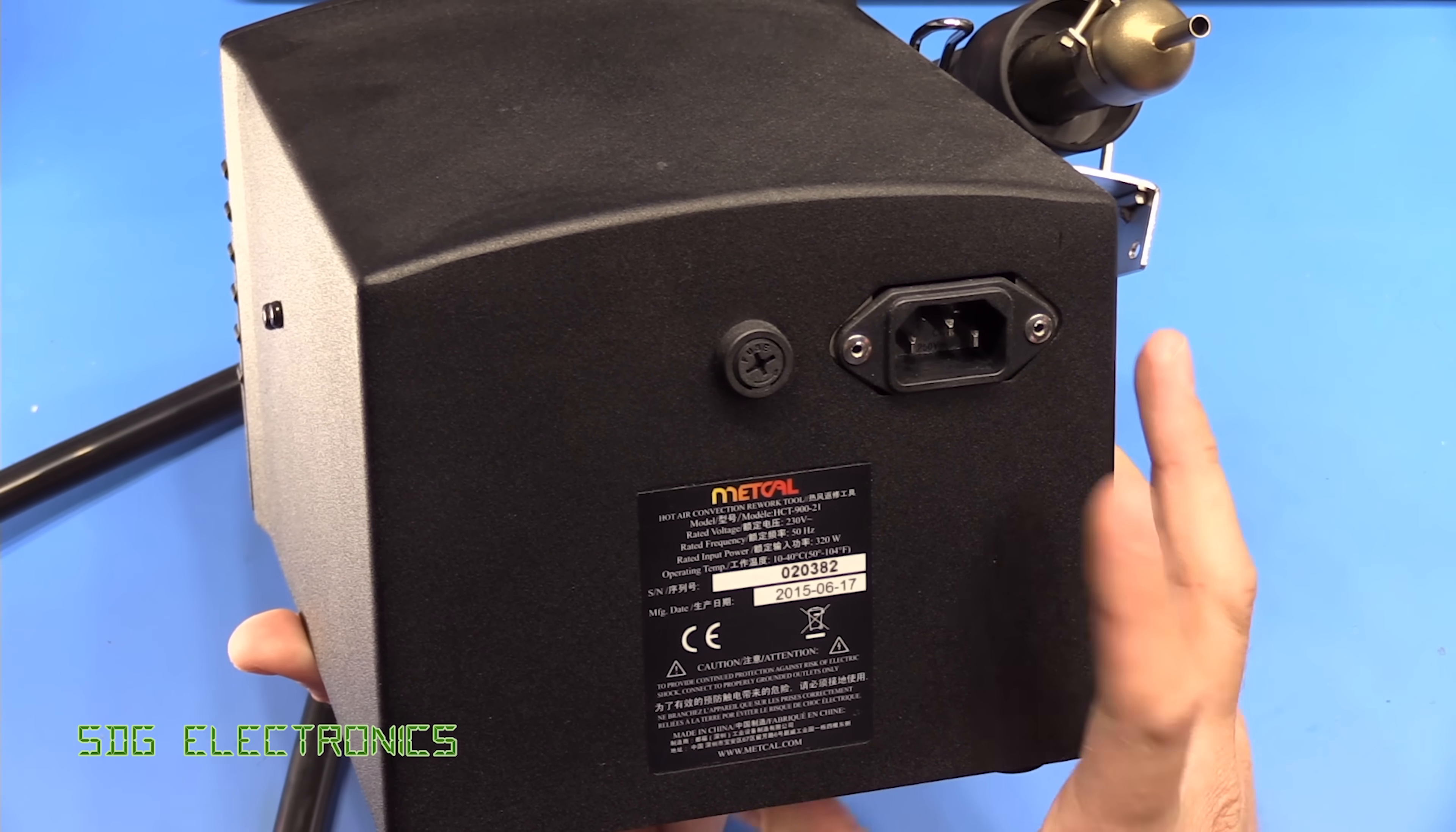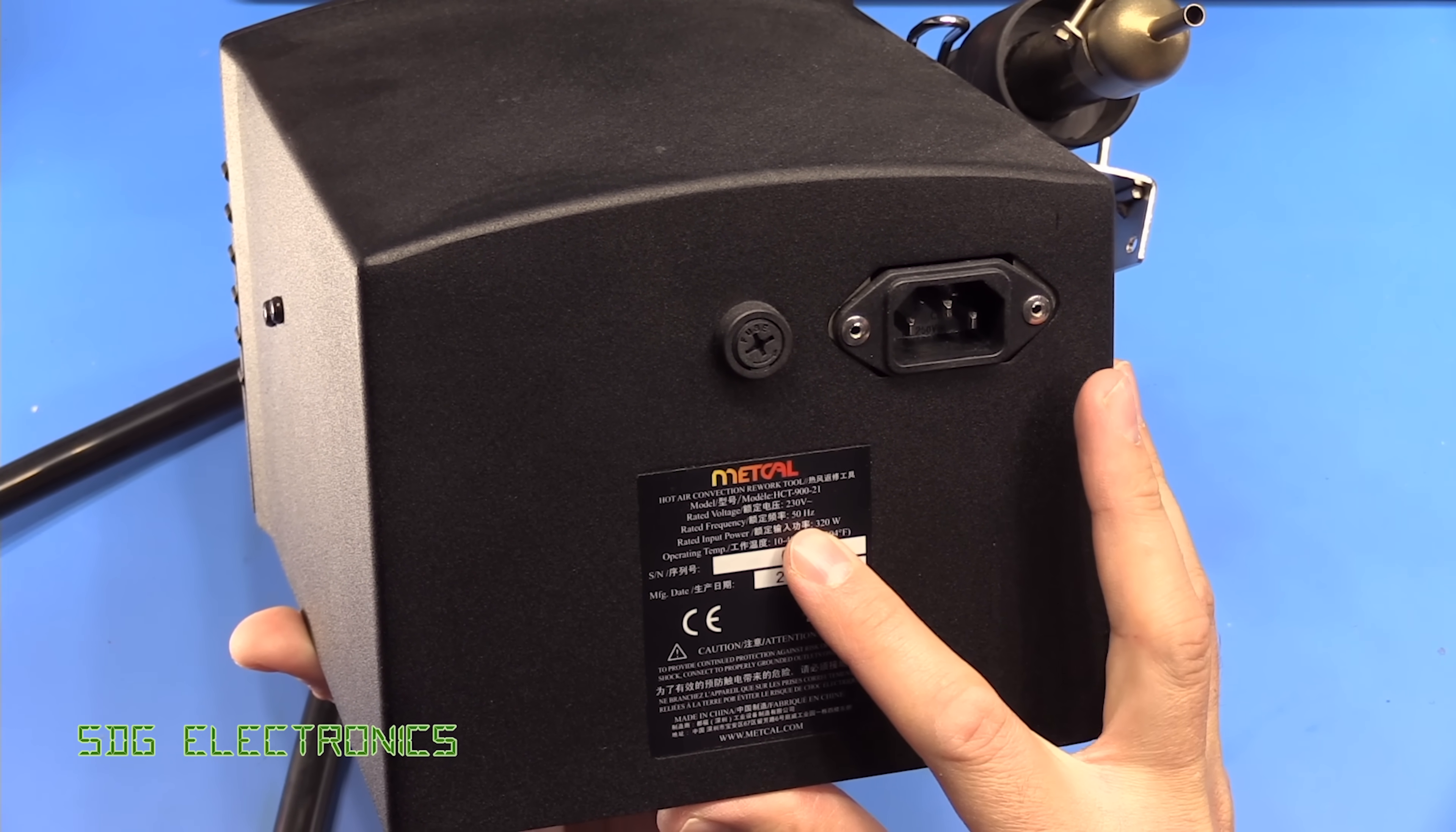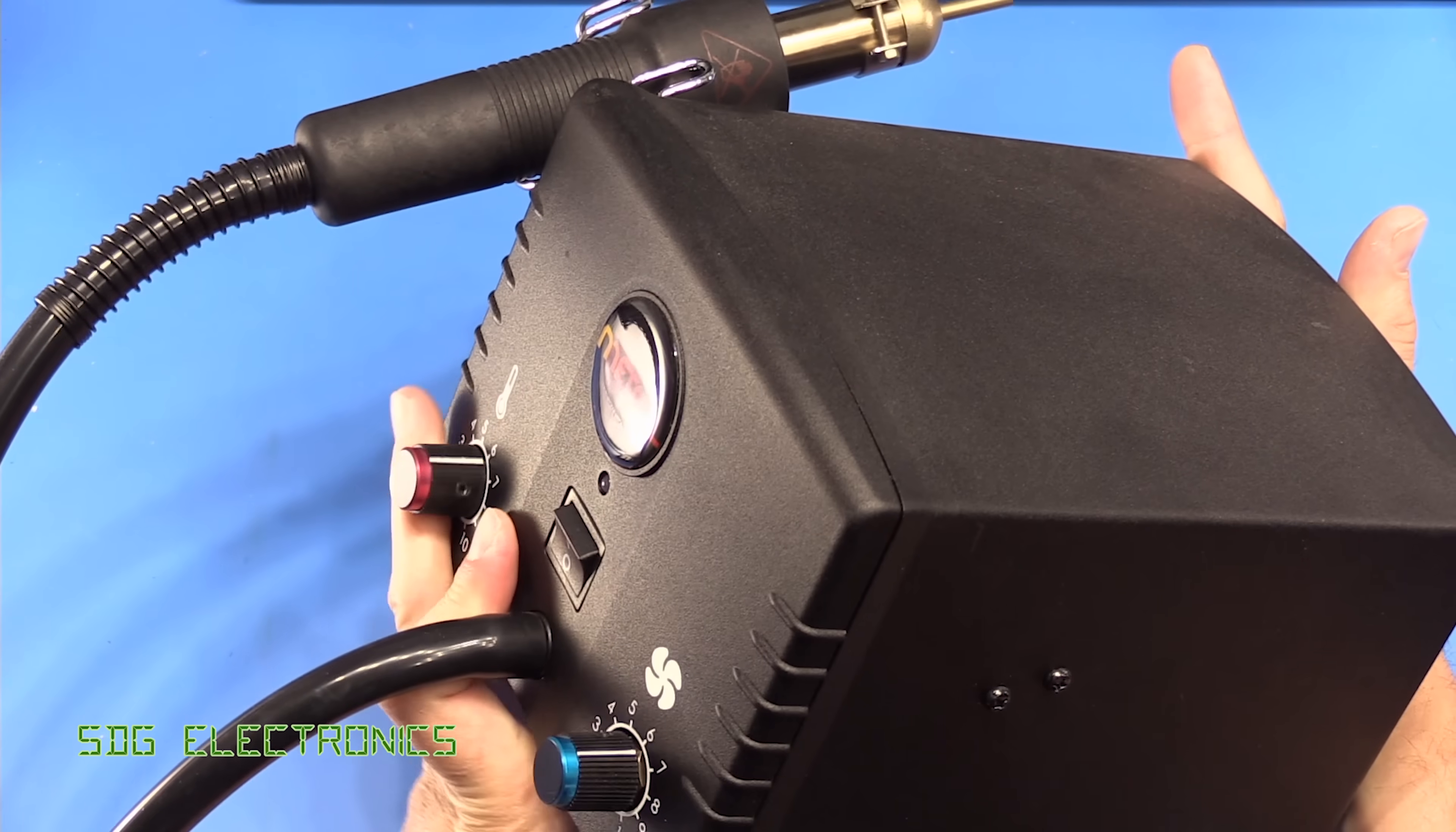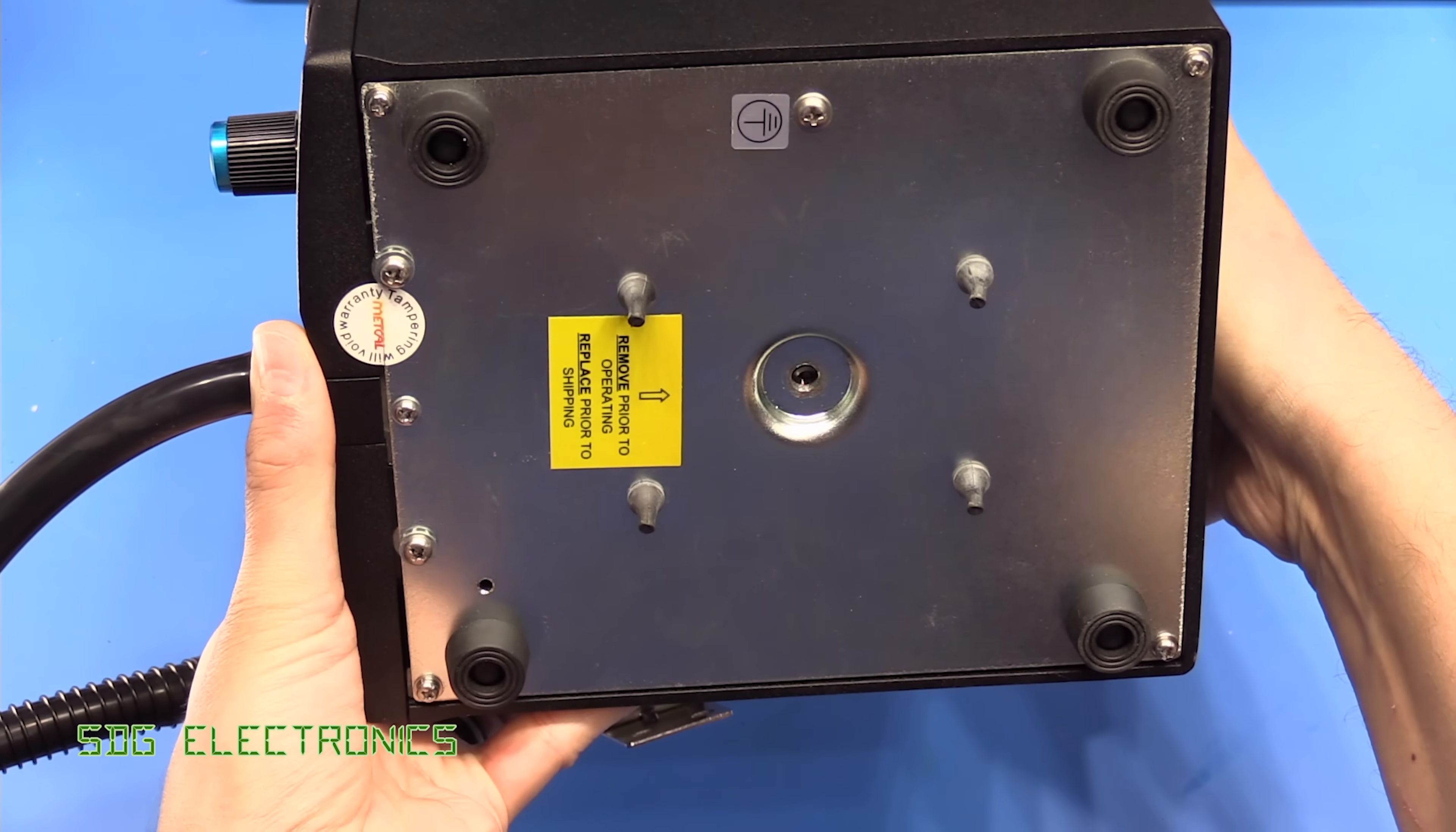There's not a lot on the rear of the unit, just the IEC connector and the fuse. This is specifically a 230 volt model, so no universal input as you'd expect because the heating element is running off the mains. Other than that there's not really much to say. It's quite a bare bones unit but it's very well built and really quite heavy.